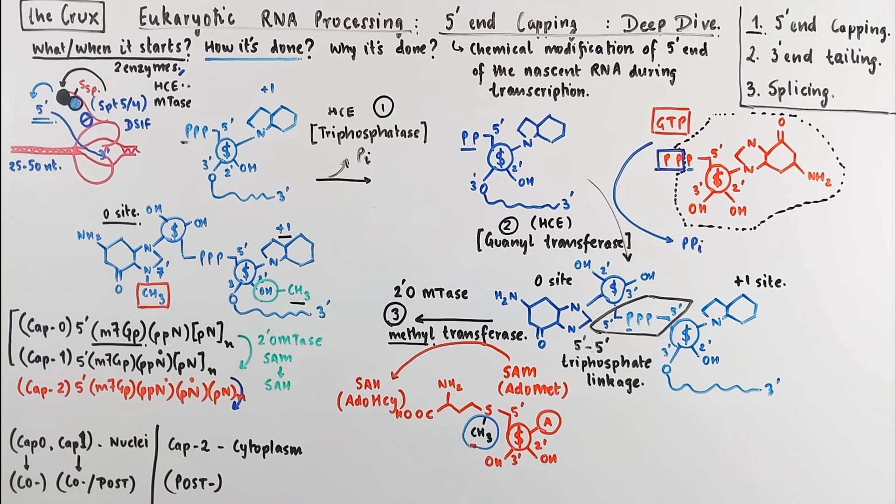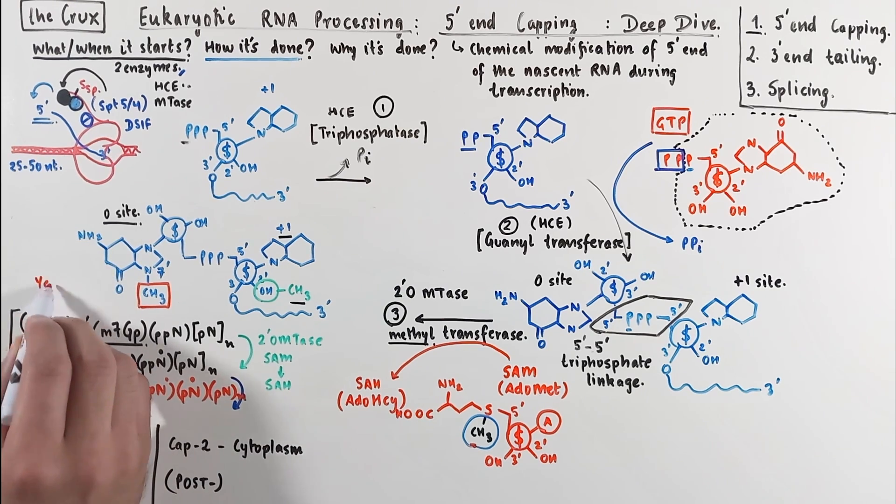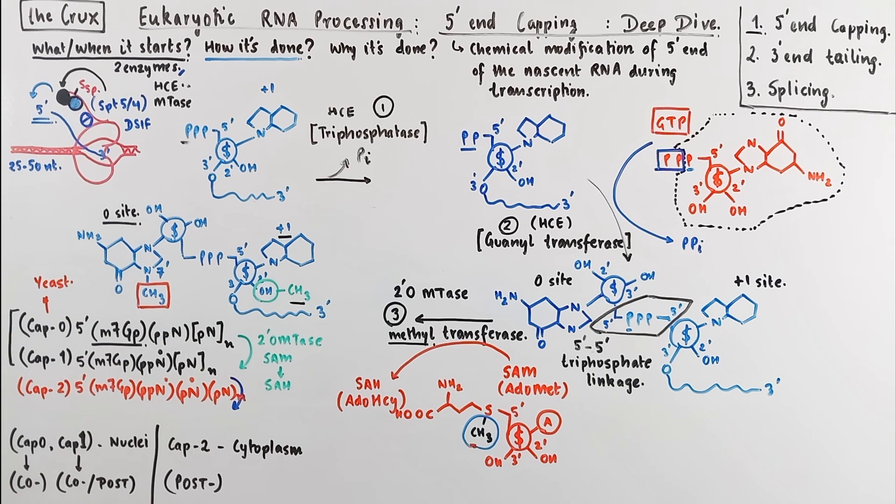If you look at lower eukaryotes like yeast, you will only find cap 0. It doesn't have cap 1 or cap 2. But in higher eukaryotes, mammals for instance, can have cap 1 and cap 2 modifications present in their RNAs.